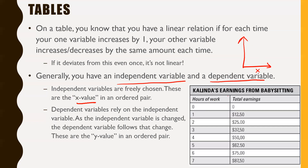Dependent variables are the other ones — they rely on the independent variable. As you change your independent variable, your dependent variable changes with it, following what that change would be. In the bag of chips example, your x would be the number of bags of chips — you have control over that. The dependent variable is the overall cost, because that's what responds to your choice.